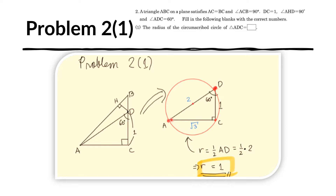This is true for any right triangle: the hypotenuse is the diameter of the circumscribed circle. So the radius is just half the hypotenuse. Because this is a 60-30-90 triangle, the ratio of the short leg DC to the hypotenuse is 1 to 2. Since DC equals 1, the hypotenuse is 2, and the radius is one half times 2, which is 1.